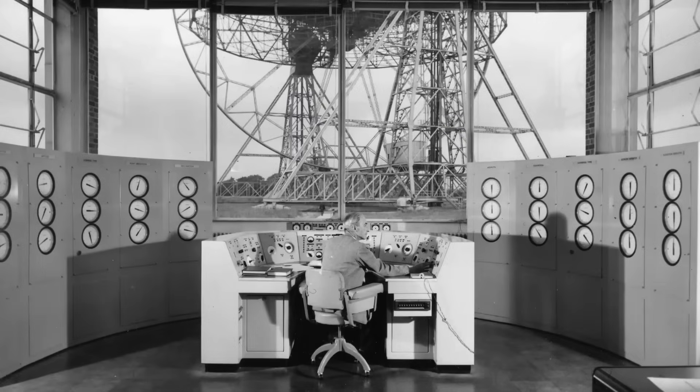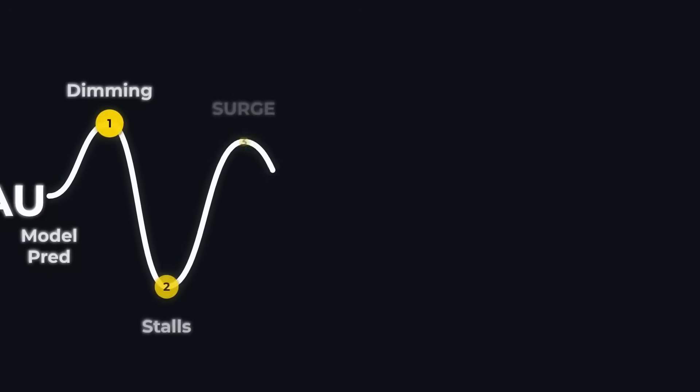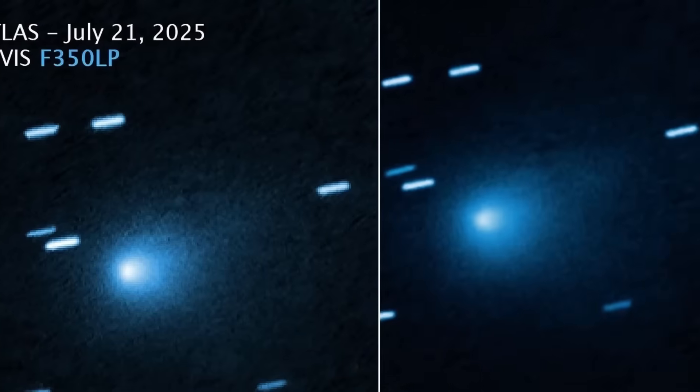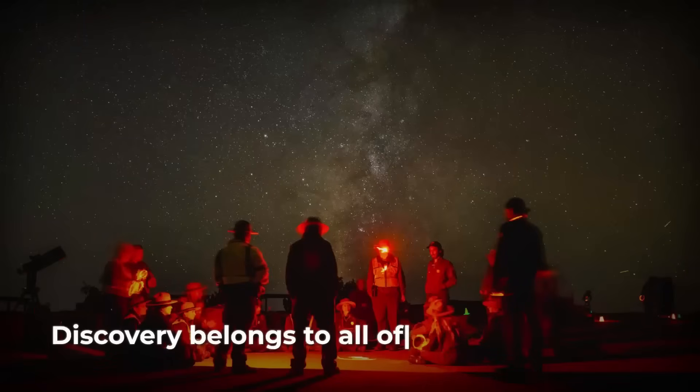This rarity means every anomaly carries enormous weight. If we had hundreds of examples, a single oddball wouldn't matter much. It could be chalked up as statistical noise, but with a sample size of just three, every detail becomes crucial. And so far, all three have been strange in their own ways.